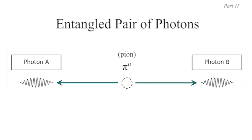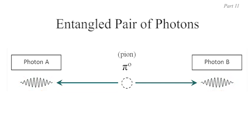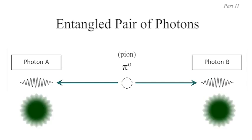Just as with two entangled electrons in the singlet state whose spins are at 180 degrees to one another, entangled photons from neutral pion decay must have their linear polarizations at 90 degrees to one another. However, the two entangled photons will not themselves have definite orientations while they are entangled — they are definitely at right angles to one another, but being entangled they don't actually have a definite direction in space. It may be better to draw the two entangled photons coming towards us with blurred or multiple-direction arrows for their linear polarization.